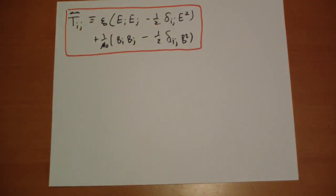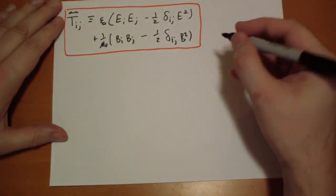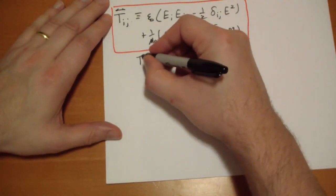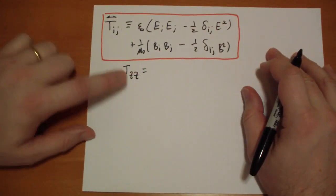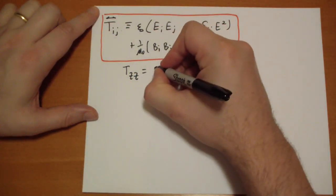And to prove it to you, I am going to derive different terms than they derived in the book. So I'm going to derive a pressure term. Let's say T Z Z. So I put Z in for I and Z in for J. So I get epsilon-knot.